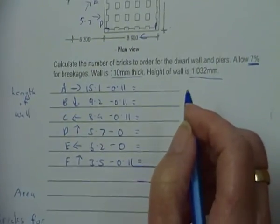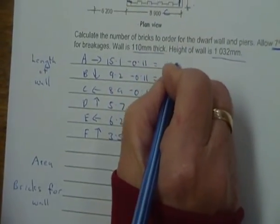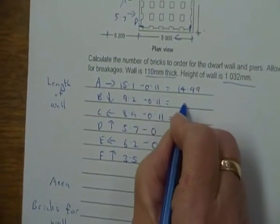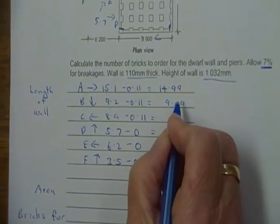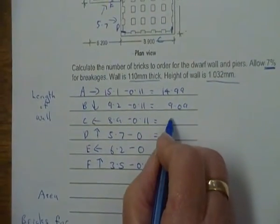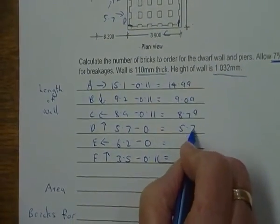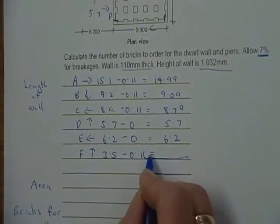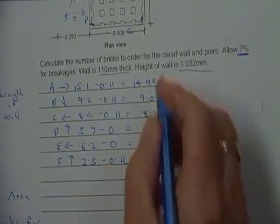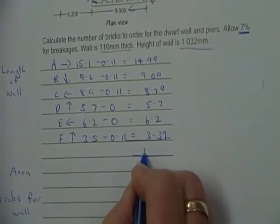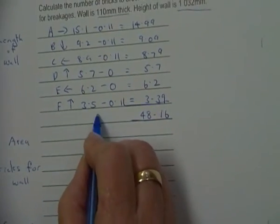So we have to calculate the length of this wall. Okay, so the A is going to give us 14.99. B is going to give us 9.09. C is going to give us 8.79. D is going to give us 5.7, these two are easy. And then F we're going to do is 3.39. We add all of these up and we should get a length of 48.16. So that's my length of the wall.